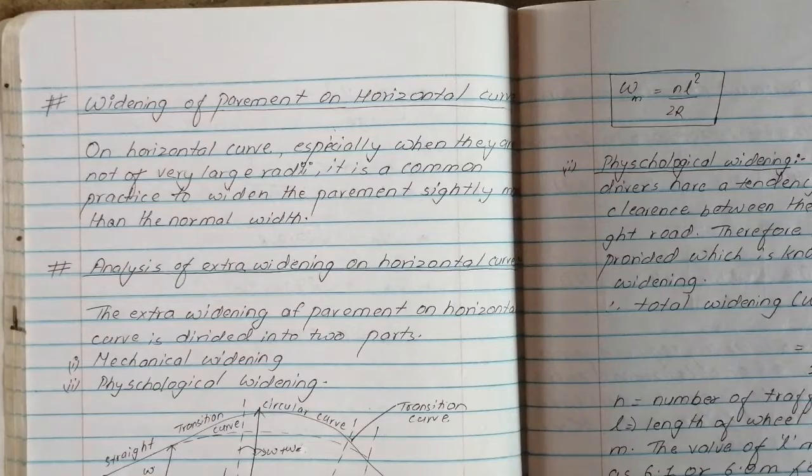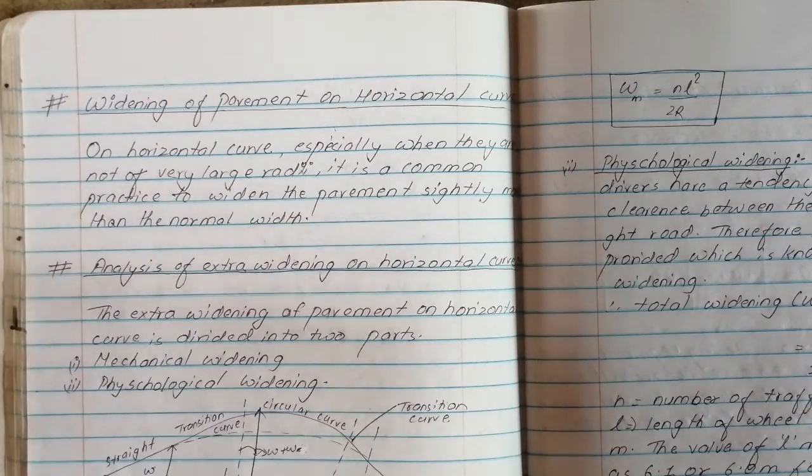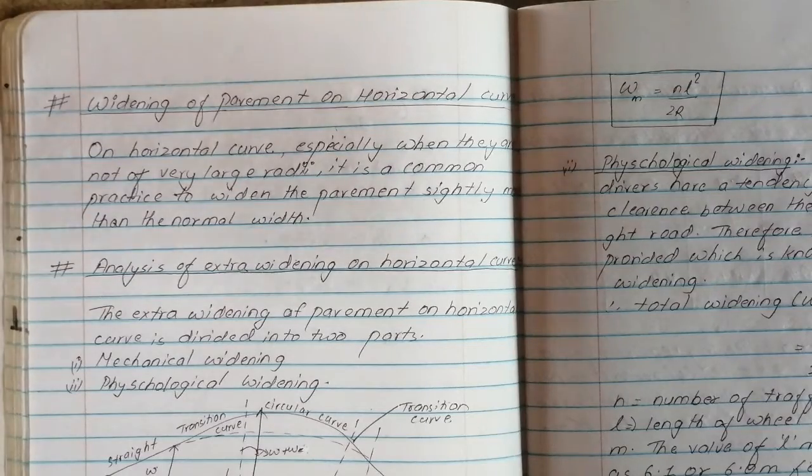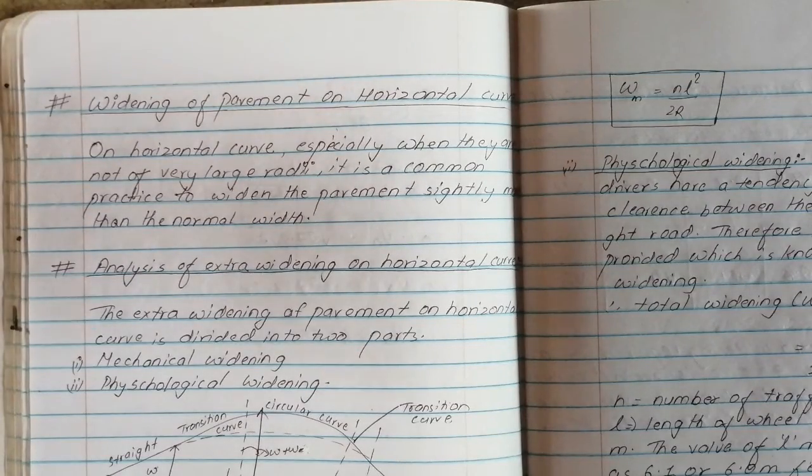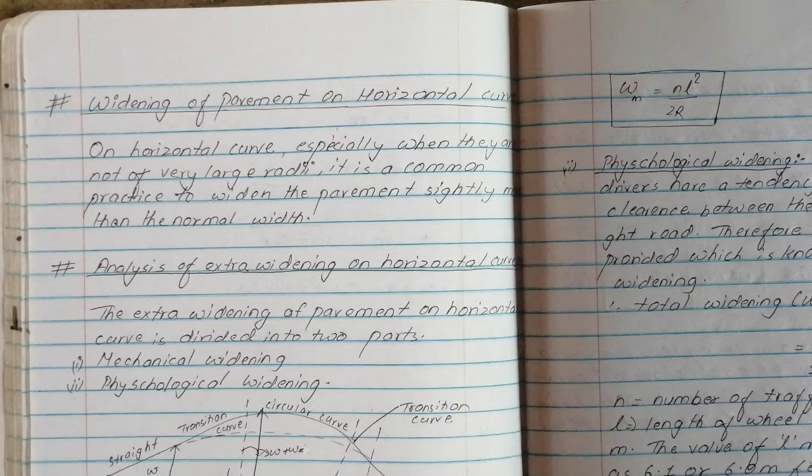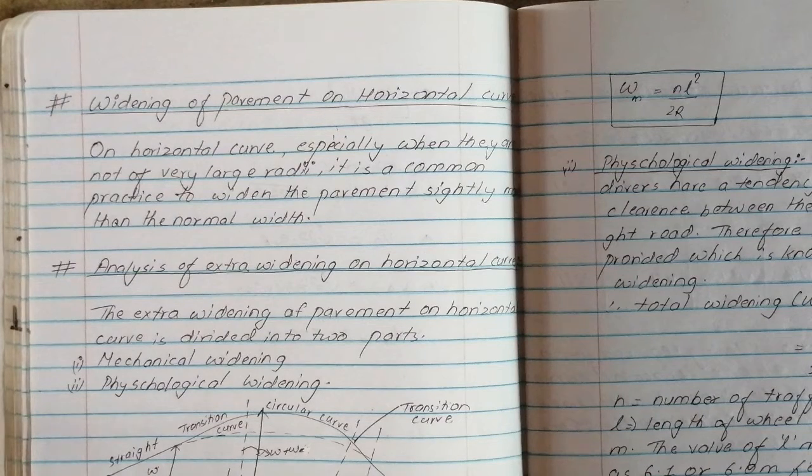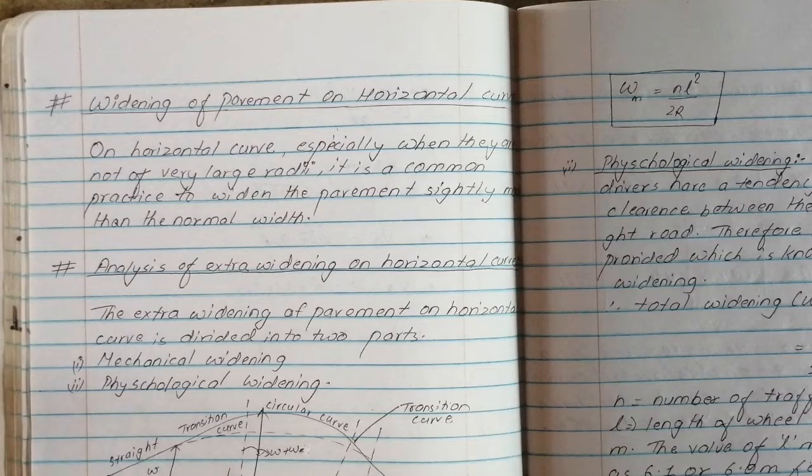This is the 4 types of highway design. We will discuss the extra widening. Extra widening is the types. This is the fixed question for extra widening.